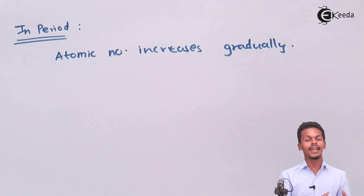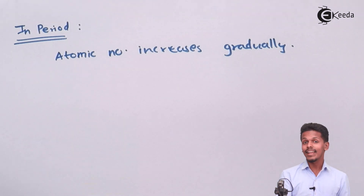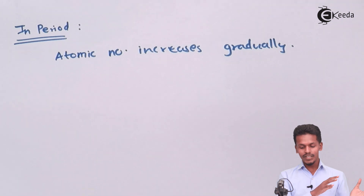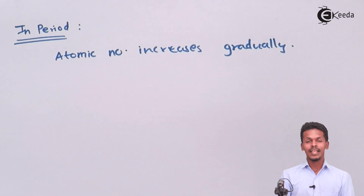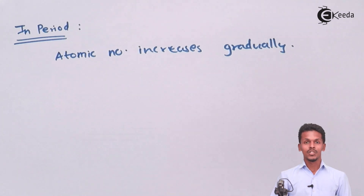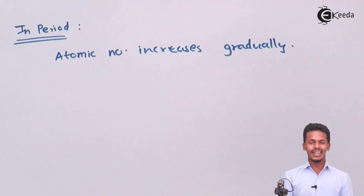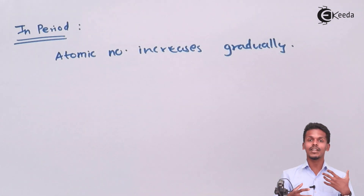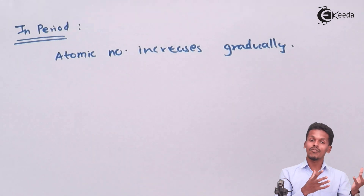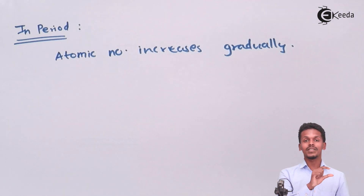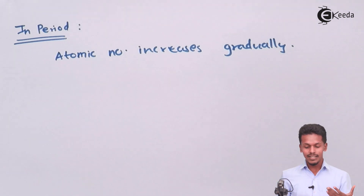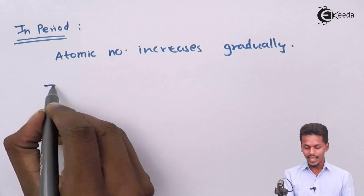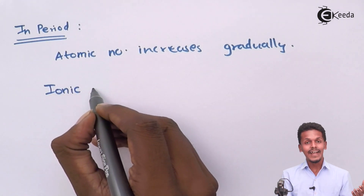Since the number of protons stays the same, if the atomic number increases it increases gradually, and we could see that the atomic size goes on decreasing. Moreover, if it has a positive charge — when we are talking about a cation — the cation will have at least one electron less. In that case, the atomic size will reduce more compared to that of an atom, leading the ionic size to decrease more effectively across a period. So the ionic size in a period actually decreases.